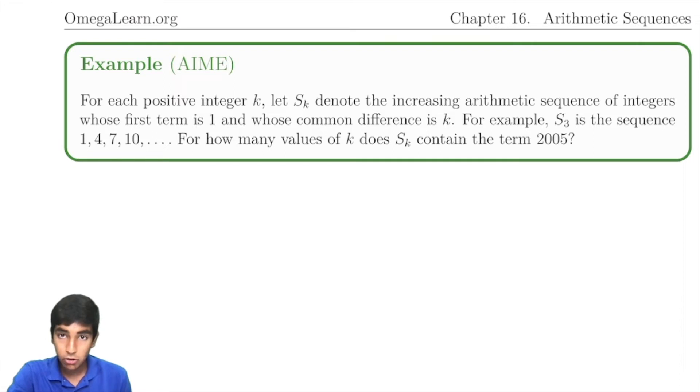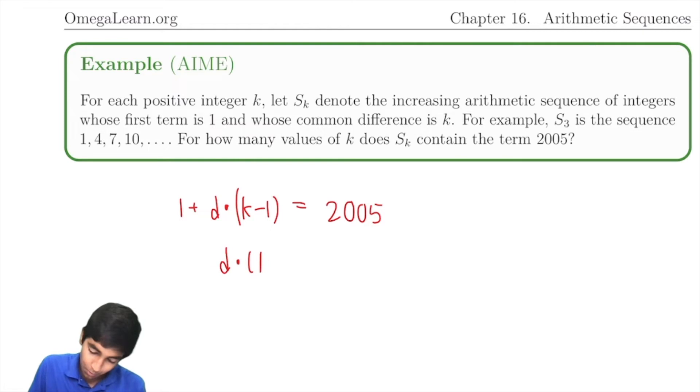The trick here is just to plug it into our arithmetic sequence formulas. We have 1 plus d, the common difference, times k minus 1, the number of terms in between s_1 and s_k, equals 2005, which means that d times (k-1) will just be equal to 2004.